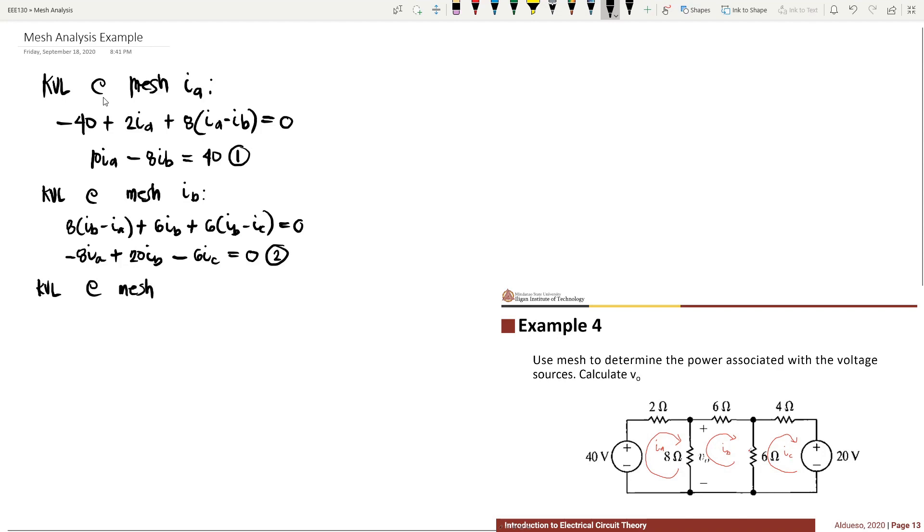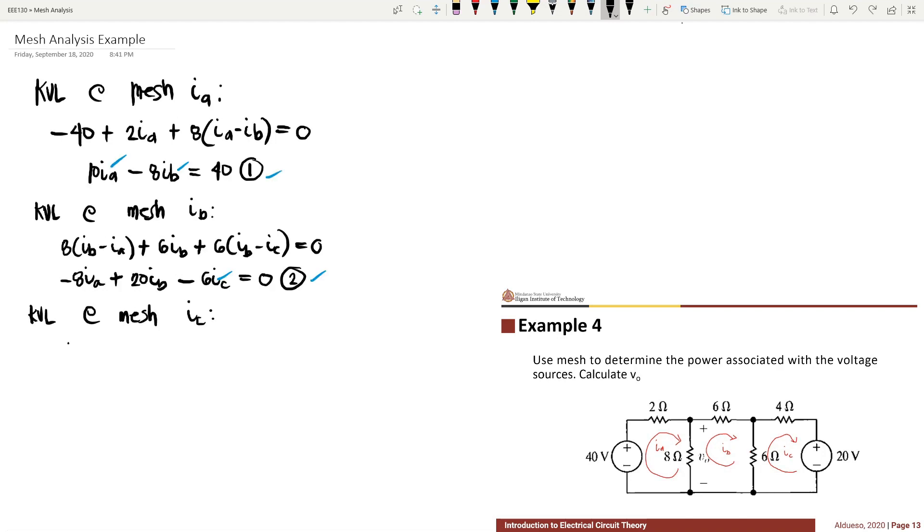For the last mesh, KVL at mesh Ic, we have 6 times (Ic minus Ib) plus 4 times Ic plus 20 equal to zero. This gives us negative 6 times Ib plus 10 times Ic equal to negative 20. This is the third equation.